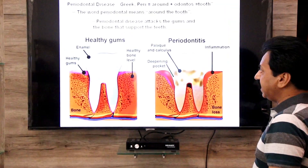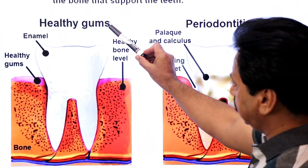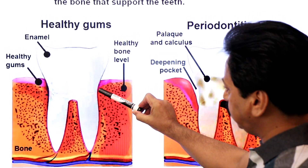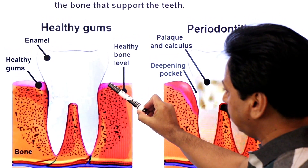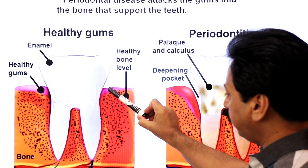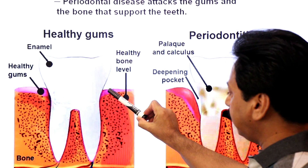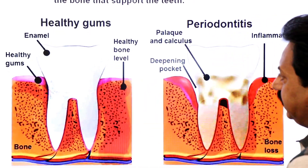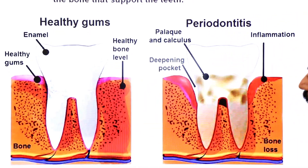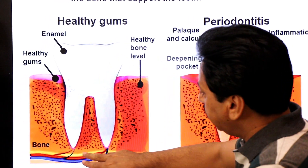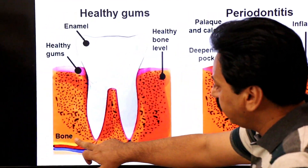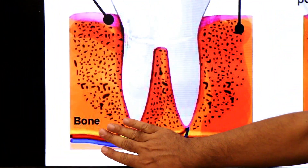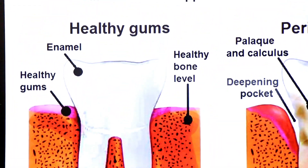Now look at the diagram. Here you see healthy gums — the soft tissues present around the neck region of the teeth. The alveolar bone is the bone that forms the socket in which the teeth are fixed. In healthy gums, you can see the bone level is also normal — a healthy bone level.